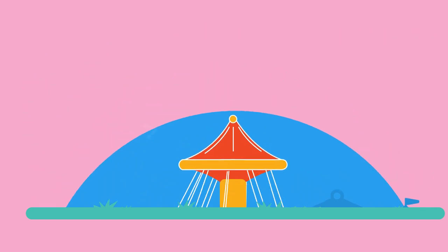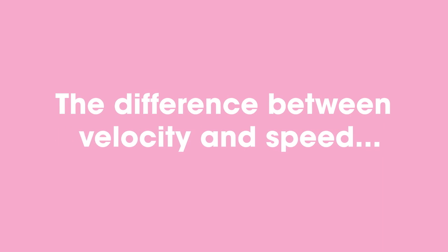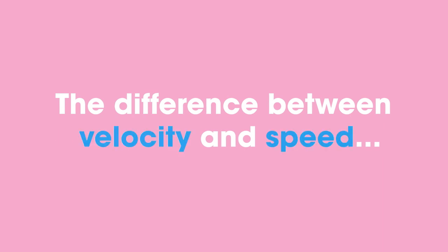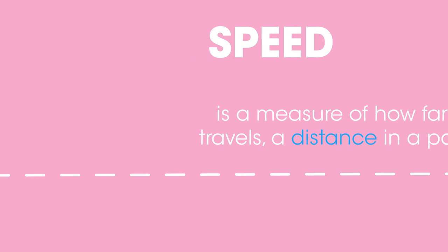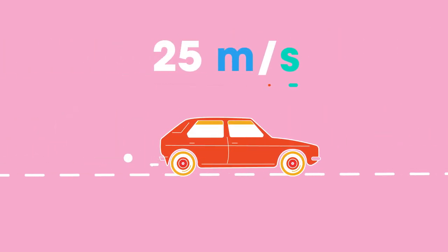First of all, what's the difference between velocity and speed? Speed is a measure of how far something travels, a distance, in a particular time. For example, a car traveling at 25 meters per second or a person jogging at 4 meters per second are both measures of speed.